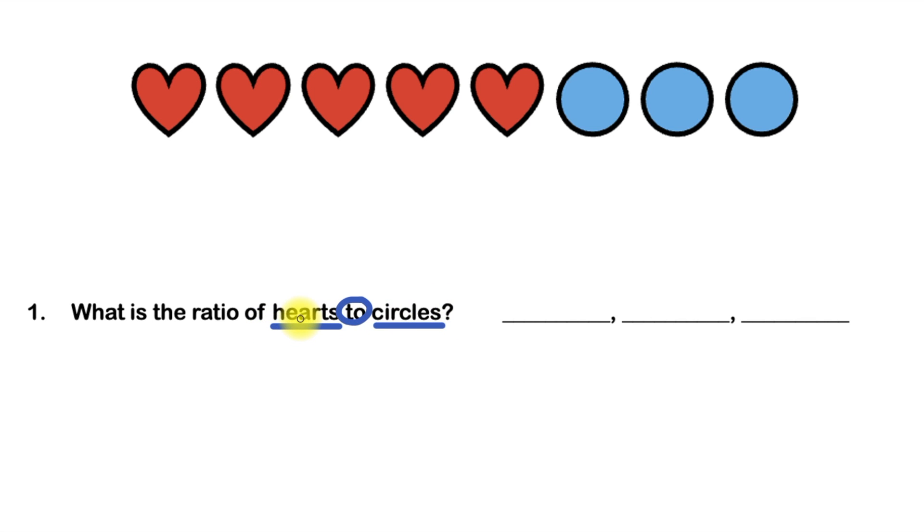So the first number we're going to write in our ratio is the number of hearts, and the second number we're going to write in our ratio is the number of circles.